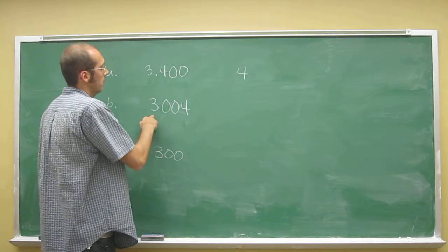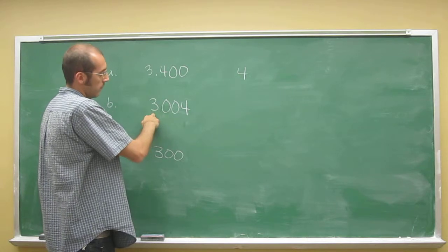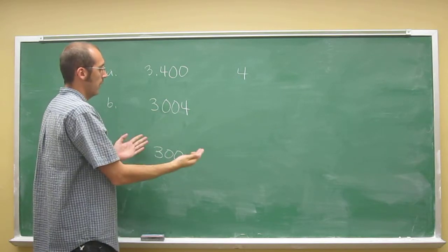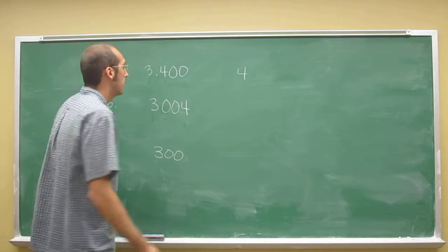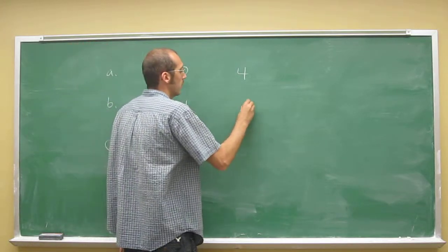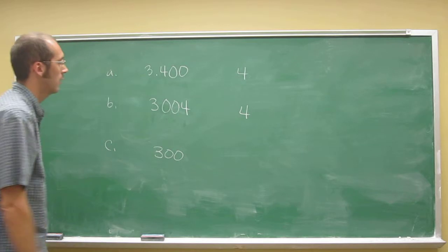So we've got a 3 and a 4, which are definitely significant, and two zeros, which are quote-unquote captive, so they are significant. So we've got a total of four significant digits.